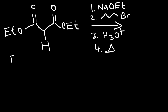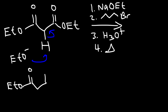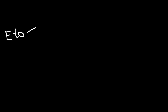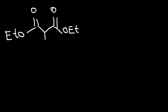So let's start with the first step, and that is deprotonation. We now have this intermediate. Then in the next step, the carbon with a negative charge is going to attack butyl bromide. So we have this product right now — we've added four carbons to the malonic ester.